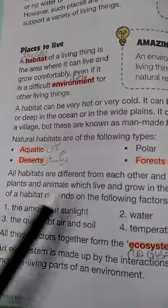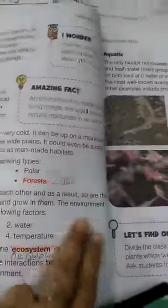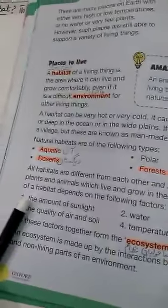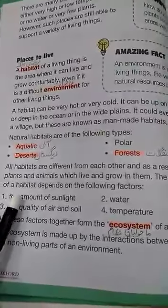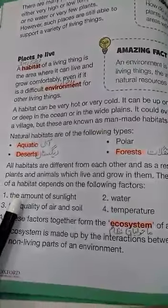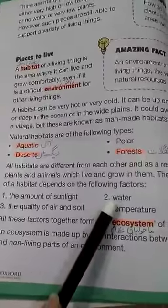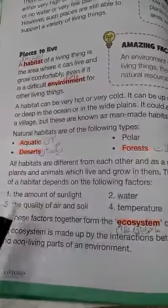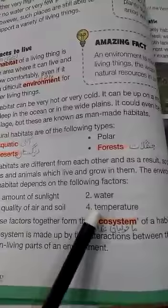All habitats are different from each other, and as a result, so are the plants and animals which live and grow in them. The environment of a habitat depends on the following factors: number one, the amount of sunlight; number two, water; number three, the quality of air and soil; number four, temperature.